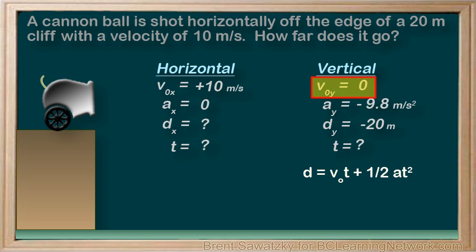We have our v0y and our acceleration in the vertical direction, and we also have our displacement in the vertical direction, which leaves t as our only unknown in this equation. Perfect!